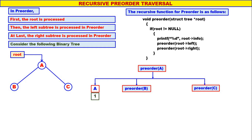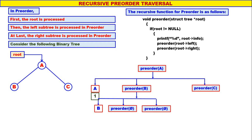Let us come to pre-order of B. B is not equal to null, therefore print B. Left of B is null, therefore pre-order of null. Right of B is also null, therefore pre-order of null. B is the second one to be displayed. Pre-order of null means nothing — root is equal to null, therefore it will not do anything.